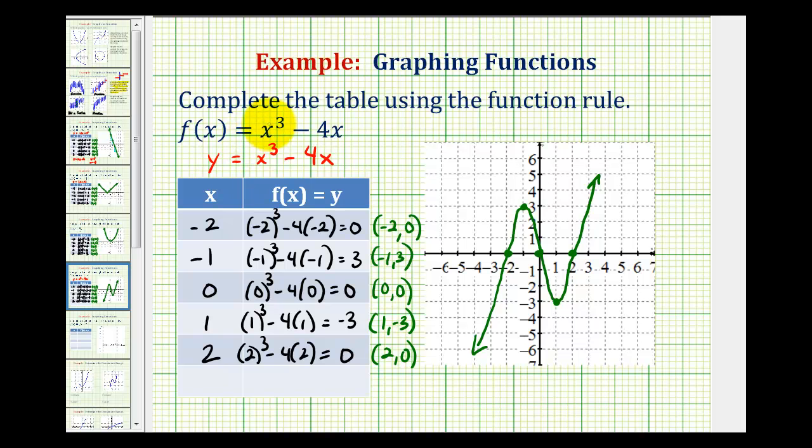Notice how this is a degree three function, and this graph has one, two turns in it. It is true that a polynomial function has at most n - 1 turns, where n would be the degree of the function.